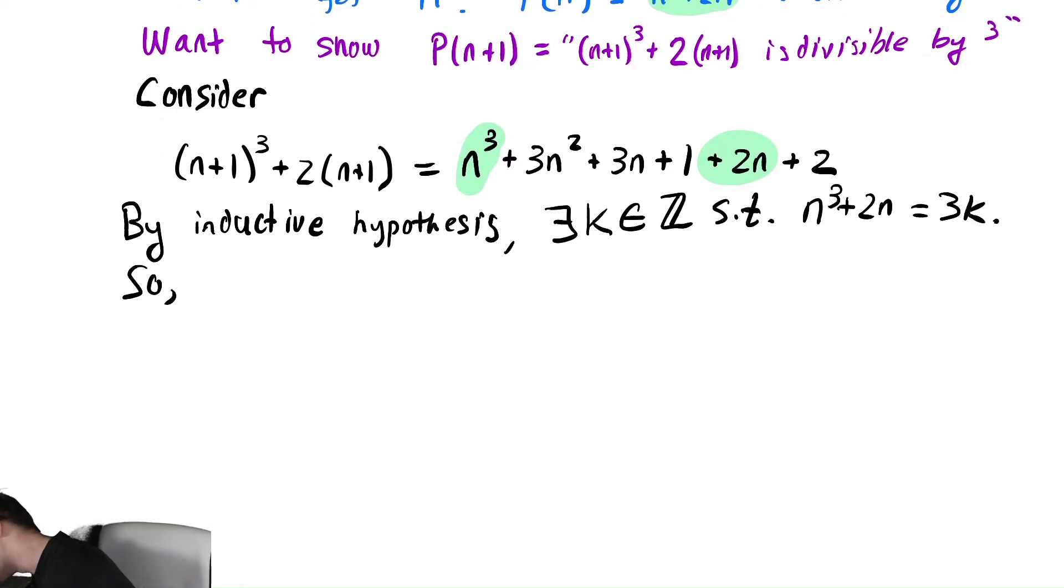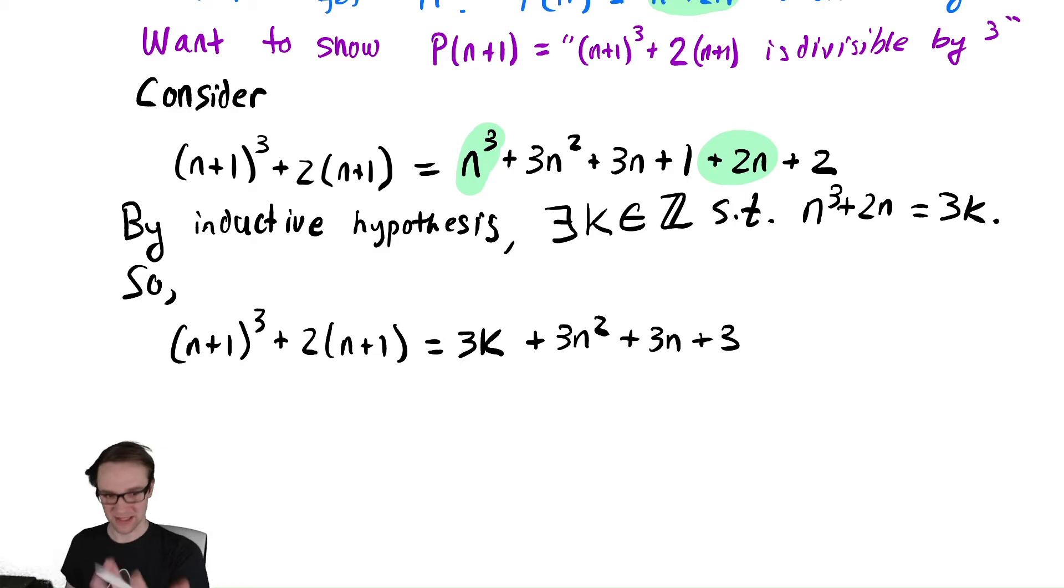So we keep going with what we had above and we get that (n+1)³ + 2(n+1) is equal to—I'm going to replace the stuff I highlighted in that mint green color with 3k. So we have 3k plus we're left with a 3n² plus a 3n. Then we have a +1 and a +2 that can combine to give me a +3. And now hopefully we can see that everything there is multiplied by 3.